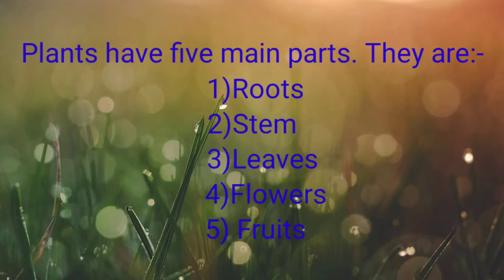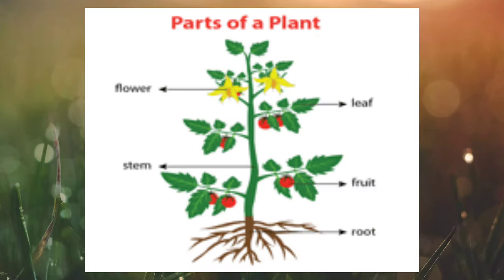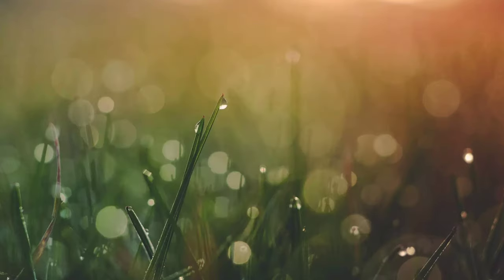Plants have five main parts. They are roots, stem, leaves, flowers, and fruits. Children, you can find the picture of a plant on the screen. Can you identify the parts of that plant? Now let us learn about each part and its function in detail.